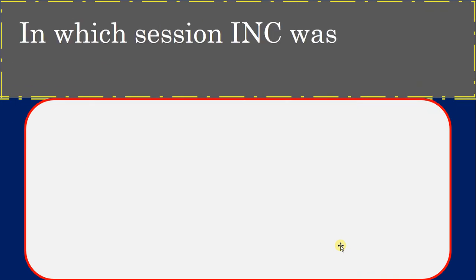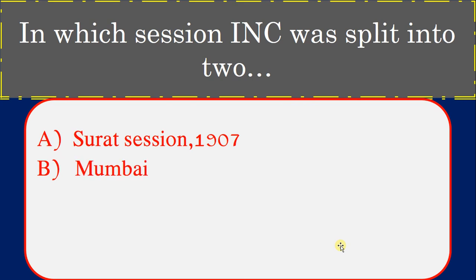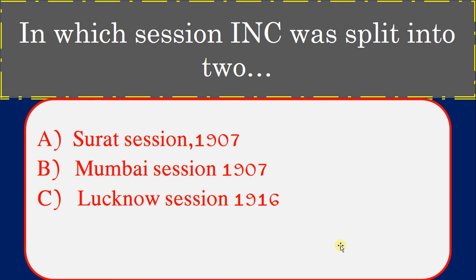In which session was the Indian National Congress split into two? Options: Surat Session 1907, Mumbai Session 1907, Lucknow Session 1916, None. Correct answer: Surat Session 1907.